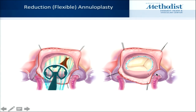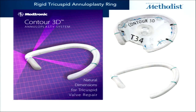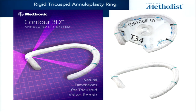A more durable option is a reduction annuloplasty using a flexible band. When I say flexible, that doesn't mean stretchable — the band is flexible but won't lengthen. If you pick a band of a certain length and place it on the annulus, the band can twist but it won't stretch, which serves as a very good way to preserve the tricuspid annular diameter. A more commonly used type is a rigid band. All of these have a gap in the middle, corresponding to the zone between 6 o'clock and 9 o'clock where there's a risk of injuring the AV node.